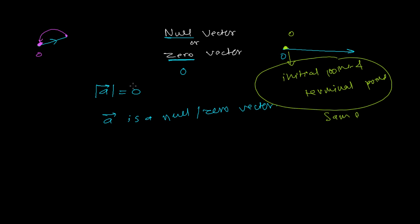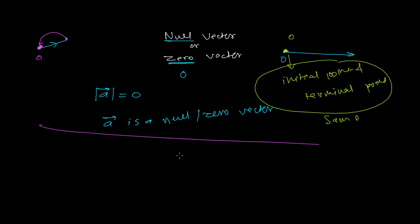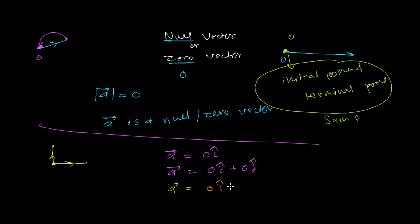If I represent this in one dimension, vector A as a zero vector is just zero times i-hat. In a 2D x-y plane, the zero vector is represented as zero i and zero j — meaning I'm moving zero in the x-direction and zero in the y-direction, so I'm not moving at all. Similarly in 3D, the zero vector is zero in the x-direction, zero in the y-direction, and zero in the z-direction.